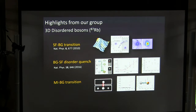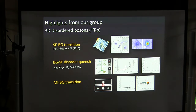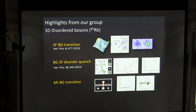We do a lot of work with bosons. I'm not going to talk about bosons today, but if you want to catch up, we have a result that we're taking final data on now where we can finally see the Mott insulator to Bose glass transition in 3D using core compressibility. We're quite excited about that — you can see a very clear transition.